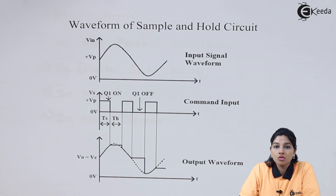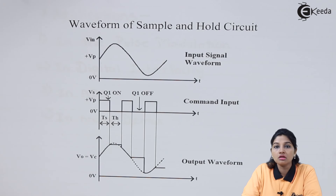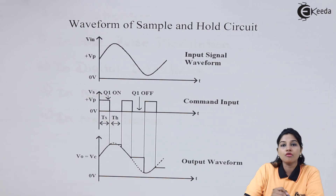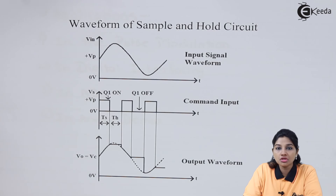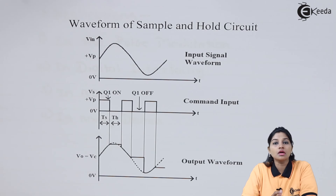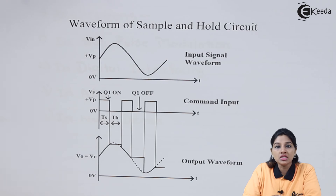From the waveform of the sample and hold circuit, the input waveform is a sine wave. Vs is the command input signal — that is the control signal Vc which controls the turning on and turning off of the MOSFET. The waveform is divided into two time periods: Ts and Th. Therefore, the total time period T equals Ts plus Th, where Ts is called the sampling time and Th is called the holding time.